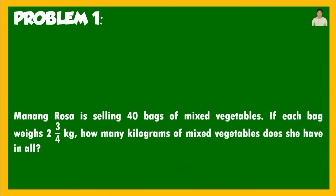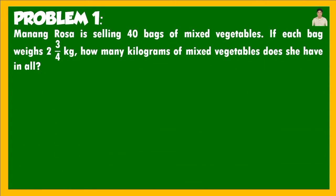Let's have the first problem. Manang Rosa is selling 40 bags of mixed vegetables. If each bag weighs 2 and 3 fourths kilograms, how many kilograms of mixed vegetables does she have in all? Based on the problem, she is selling mixed vegetables — we have 40 bags, and each bag weighs 2 and 3 fourths kilograms. The question is: how many kilograms of mixed vegetables does she have in all?